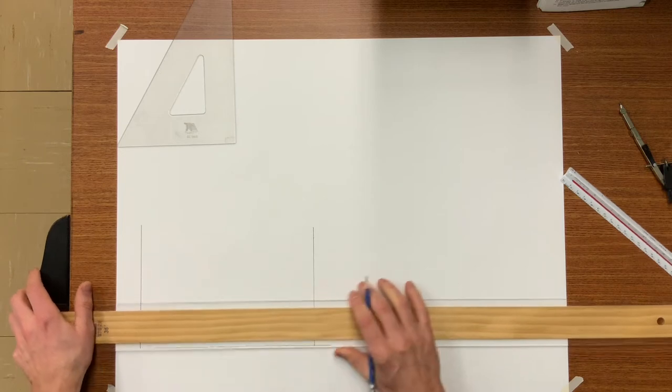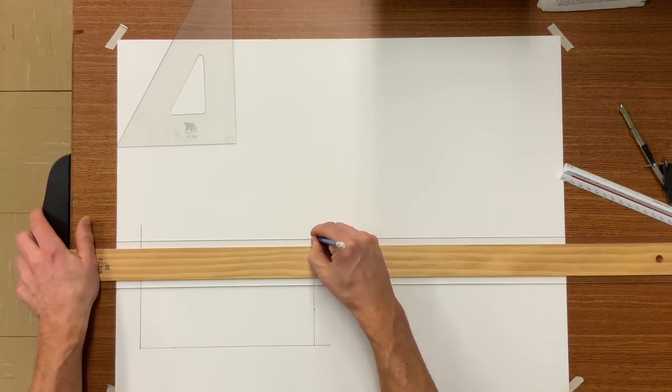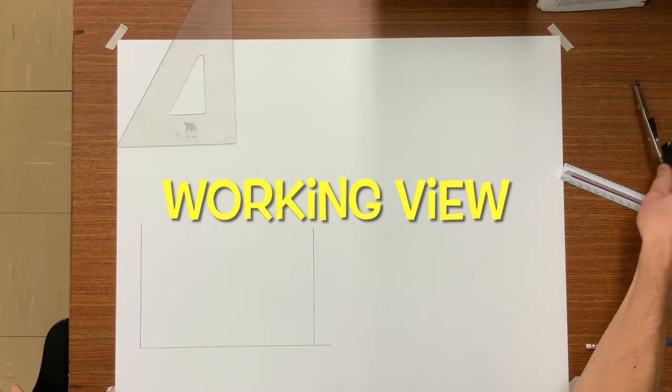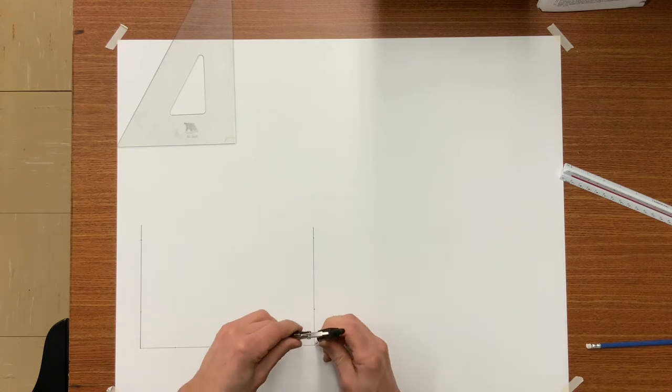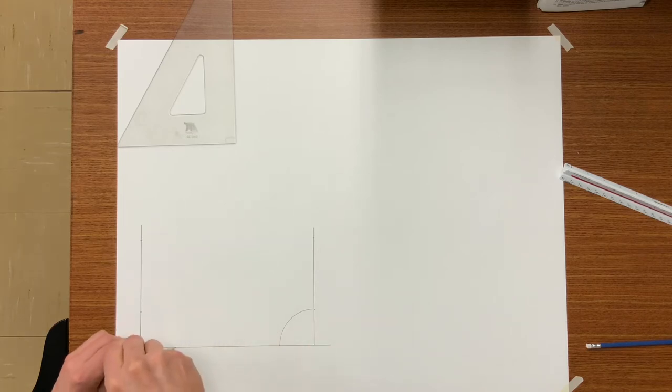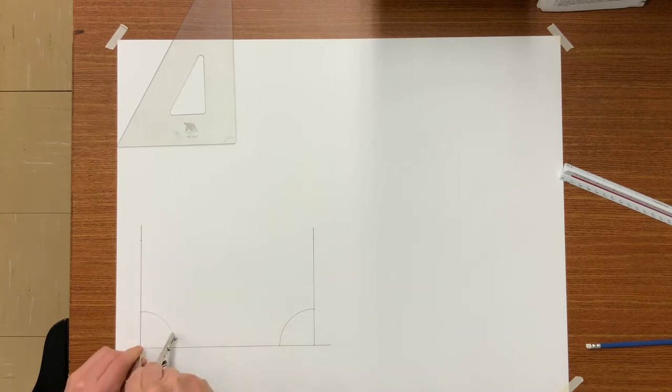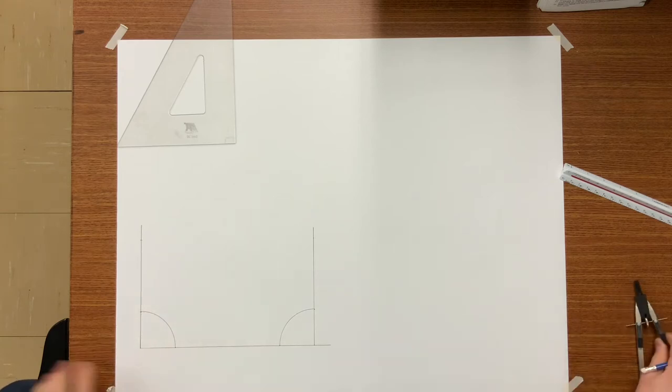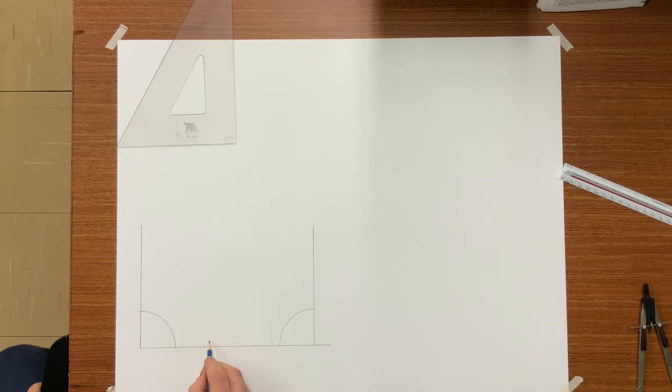I'm just transferring my dimensions from one side of my Y to the other side. Setting my dividers to 2 inches and strike an arc on both sides. And this should leave with 6 inches at the bottom of the Y, 6 by 4 inches deep.